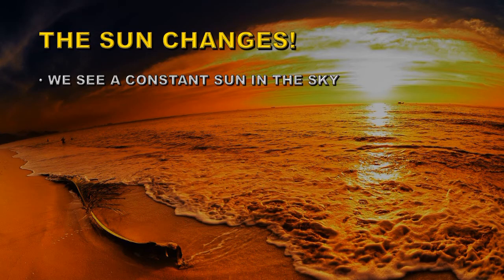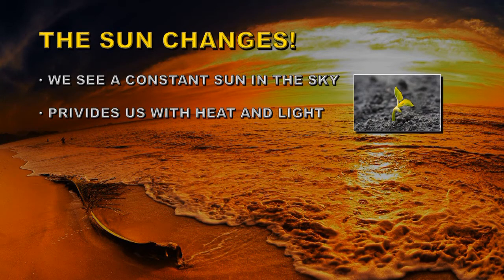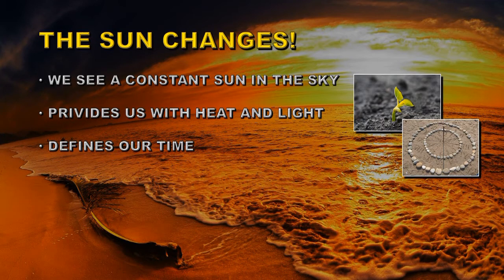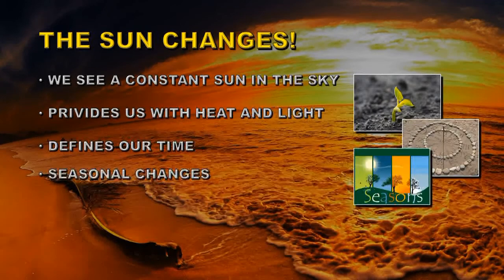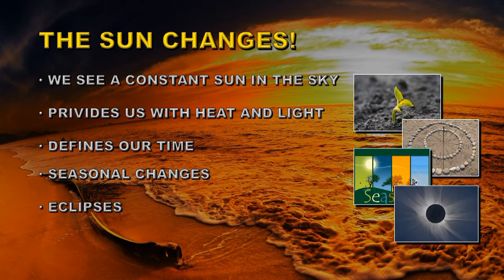The Sun changes. We generally see a constant Sun in the sky, and that's reassuring because it provides us with the heat and light we need for life on Earth. We use the Sun to define the length of the day and the length of the year. We see the seasons change as the Sun's height in the sky changes — low in the winter, high overhead in the summer. But when the Sun disappears, as it did on August 21st during a total solar eclipse, it can be quite worrying and quite stunning, particularly when you don't understand what is actually happening.